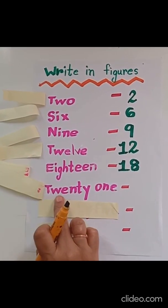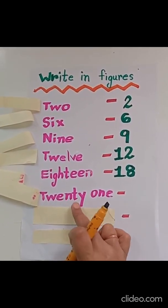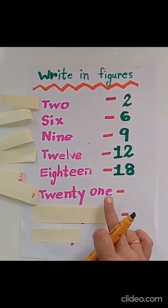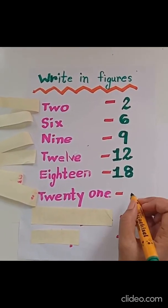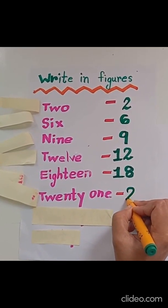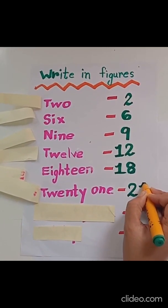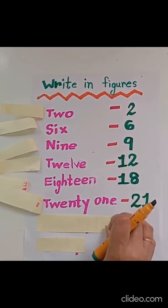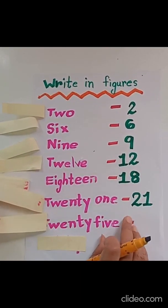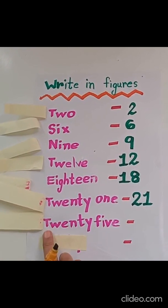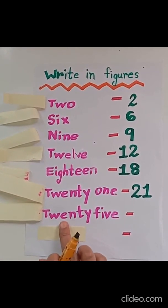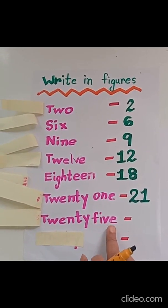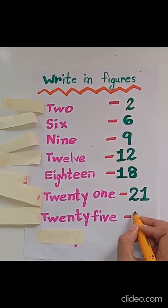T-W-E-N-T-Y O-N-E, 20 + 1 = 21. So we will write 21. Now let's see the next number name: T-W-E-N-T-Y F-I-V-E, 25. Let's write 25.